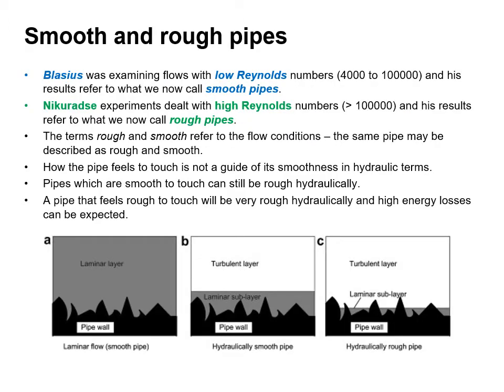Blasius was examining flows with low Reynolds numbers and his results refer to what we now call smooth pipes, while Nikuradse's experiments dealt with high Reynolds numbers and refer to what we now call rough pipes. The terms rough and smooth refer to the flow conditions — the same pipe may be described as both rough and smooth. How the pipe feels to touch is not a guide to its smoothness in hydraulic terms; pipes smooth to touch can still be very rough hydraulically.